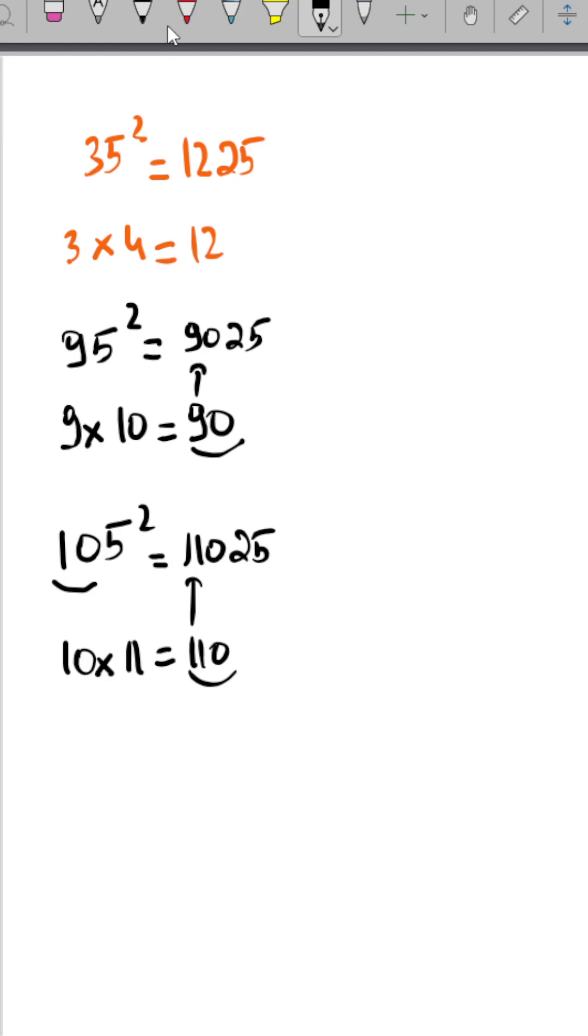So here is the rule, boys and girls. The first step to do is to always take the first digit, multiply it by the next consecutive number. You will get a specific number, you add it first after the equality and you add to it 25.